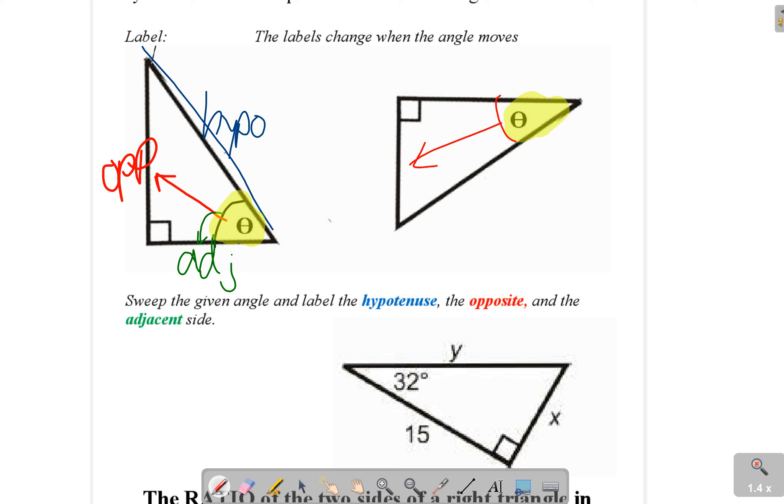So when theta is up here, this is opposite, this is adjacent, and this is hypotenuse.